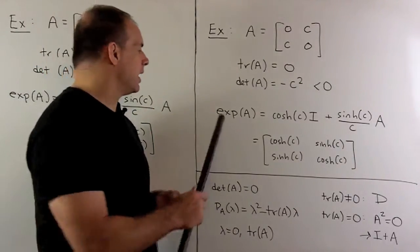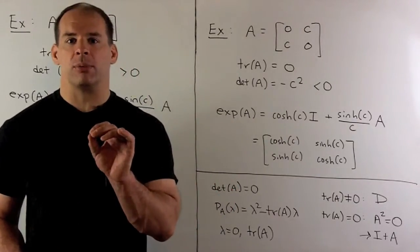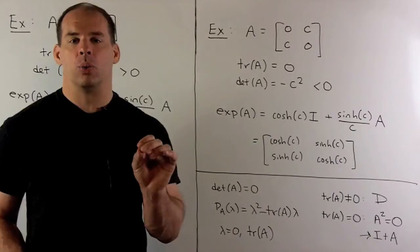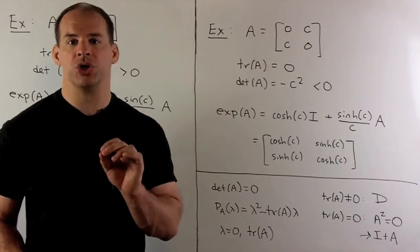Our formula states, exponential of A—we'll have the same formula as before, except we'll replace cosine and sine with hyperbolic cosine and hyperbolic sine, or cosh and sinh.